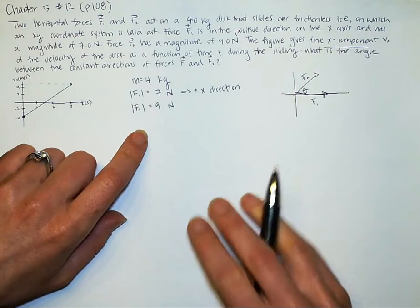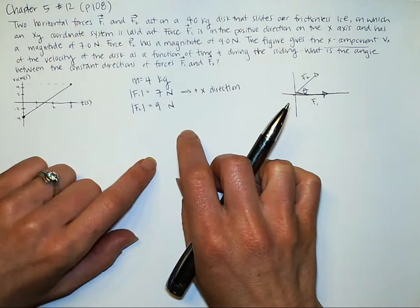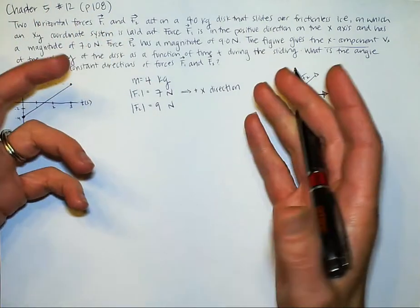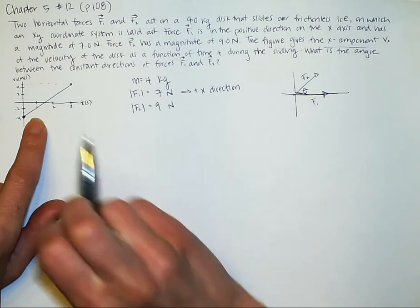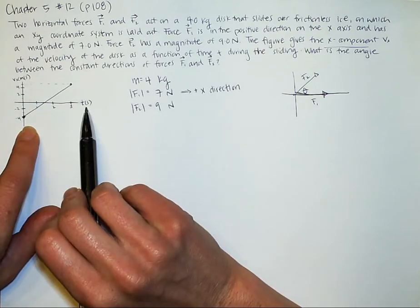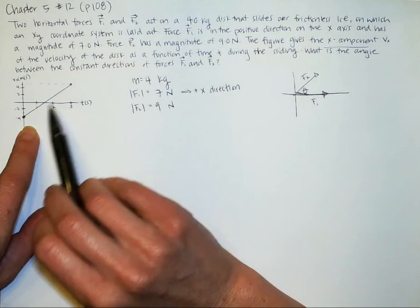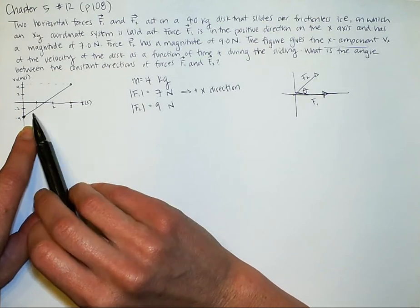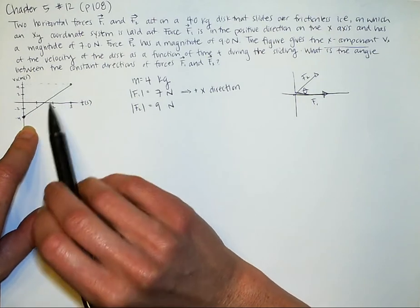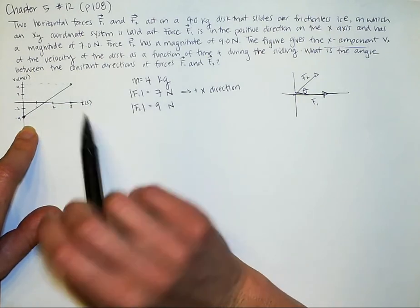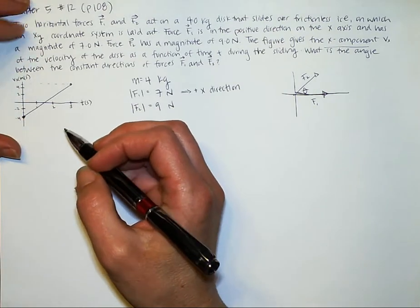What I would want to do, because this feels a little bit daunting at first because you don't know exactly how to proceed, is I would look at my graph. And I know that I have a graph of velocity versus time. We know that the slope of this graph, or the derivative of this graph, would be our acceleration. That's where I want to start, because I know that force and acceleration are tightly linked.